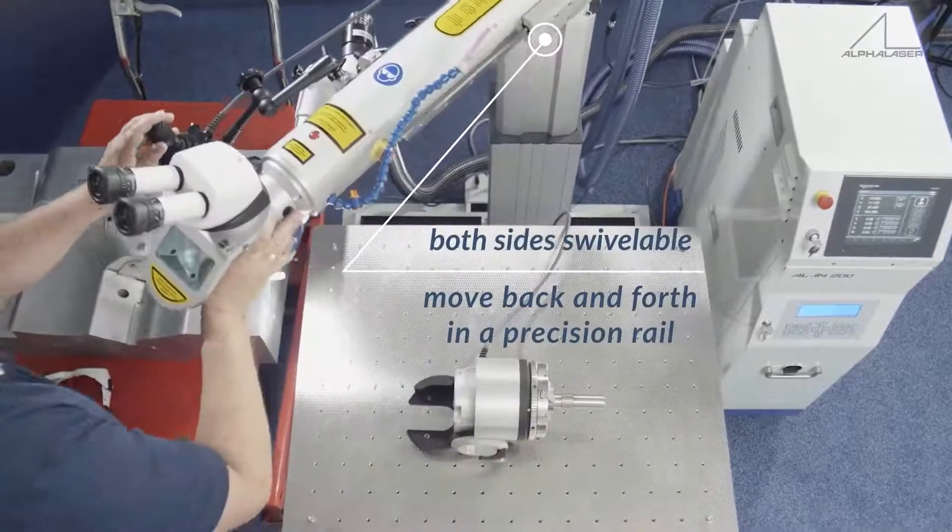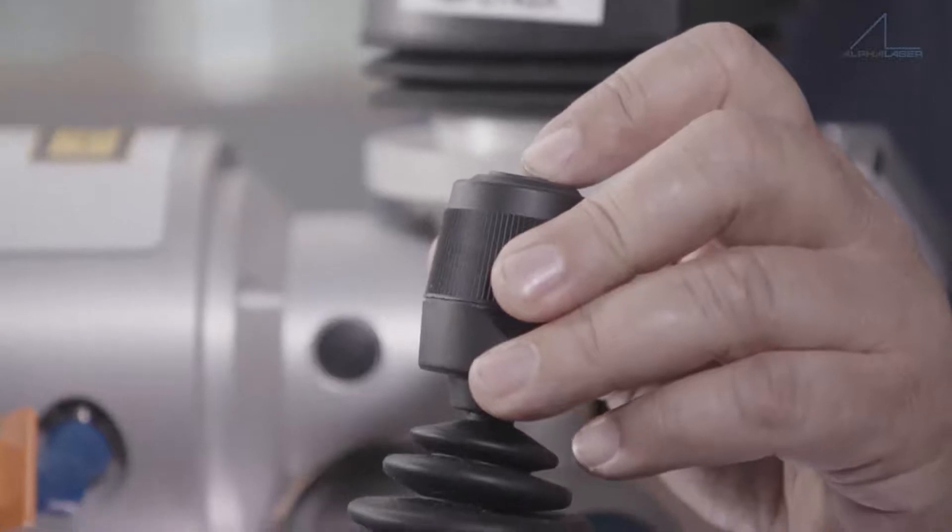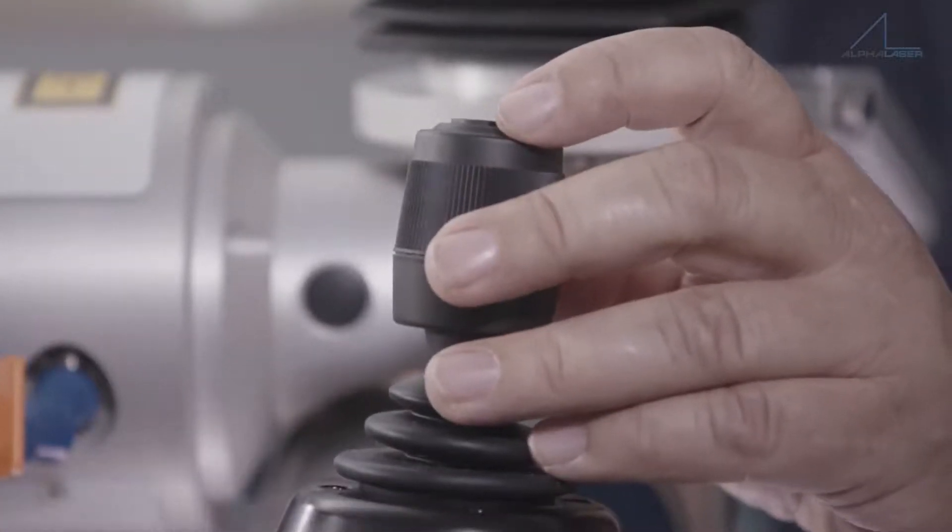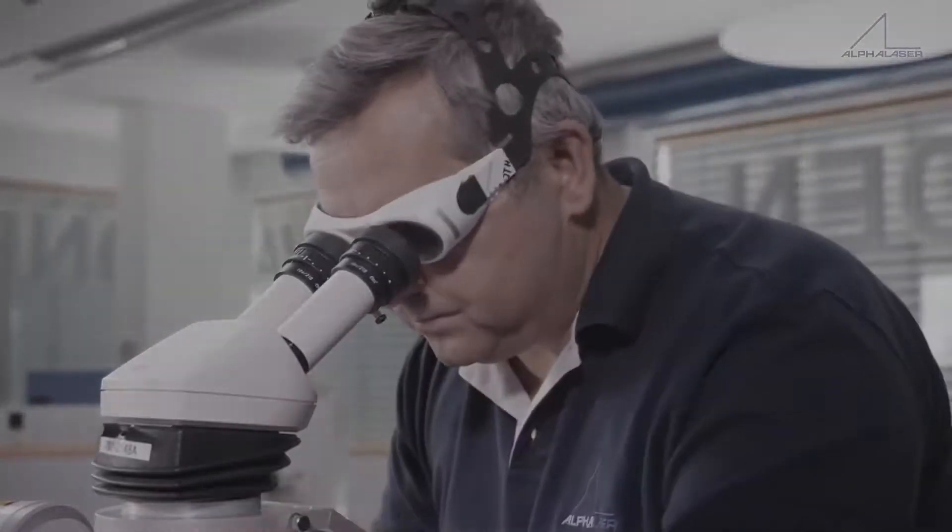The resonator can be swiveled to both sides, left or right, and may be moved back and forth in a precision rail. Thus, you can also weld large parts directly on the forklift or on the pallet.